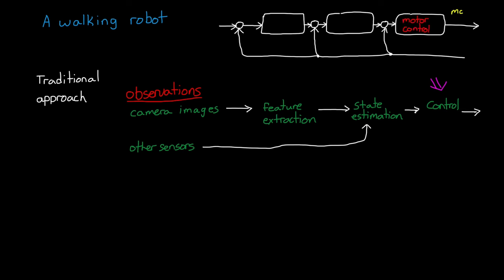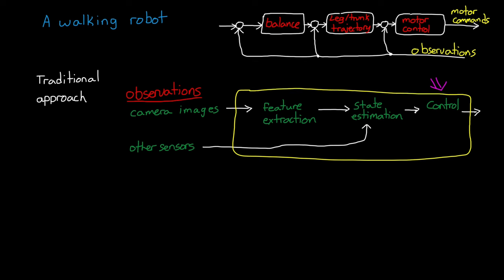And more than likely this would consist of multiple control loops that all interact with each other. For example, there would be low-level motor controllers and high-level controllers that are managing the leg trajectories or the robot trunk trajectory. And maybe a higher-level controller that is managing the balance or off-nominal behavior. And everything has to work together in an uncertain environment to generate this complex movement of walking, which can be really challenging.